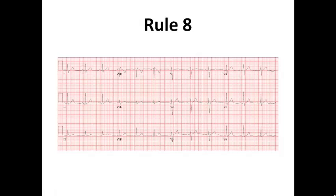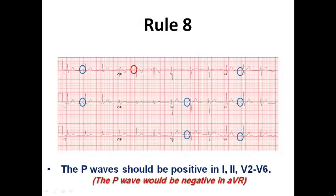Rule number eight checks the P-waves. It mentions that P-waves should be positive in lead one, lead two, and from V2 to V6, and of course negative in AVR. This is explained by the axis of atrial depolarization from the SA node, which is directed to the left side and downwards. In V1, the P-wave may be biphasic or sometimes negative.